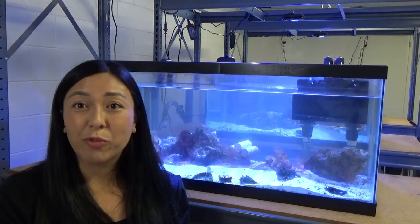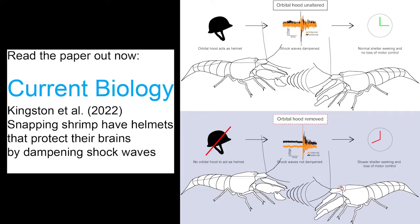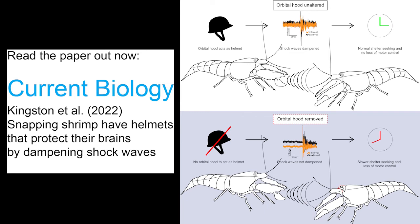We learned that orbital hoods dampen shockwaves and by doing so, they protect the brains of snapping shrimp from blast-induced neurotrauma. What's really exciting is that this is the first biological armor known to dampen shockwaves.